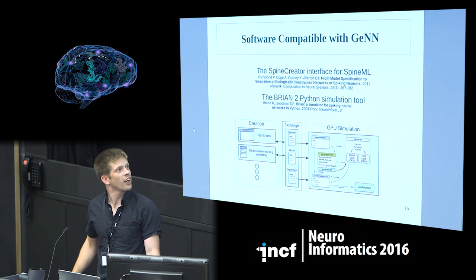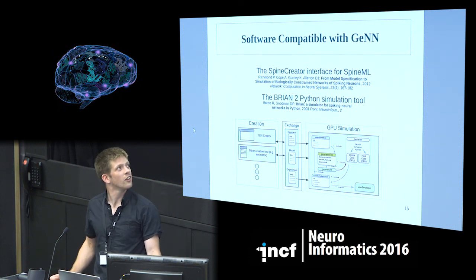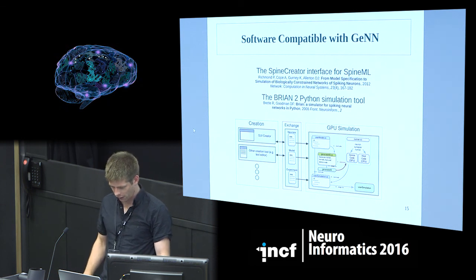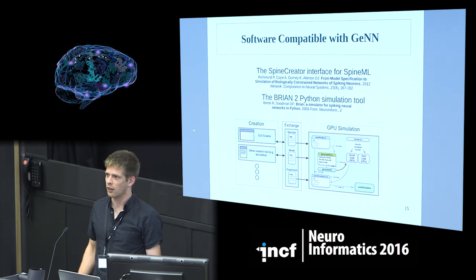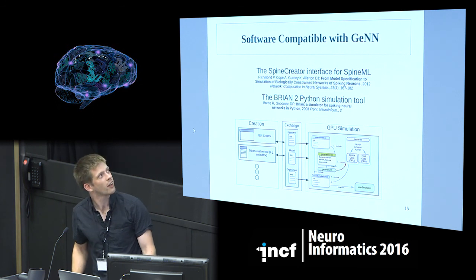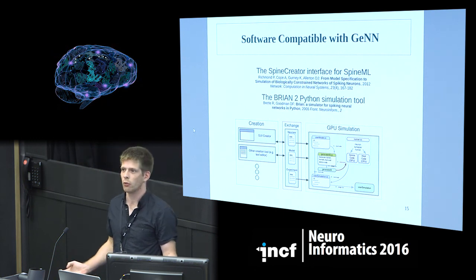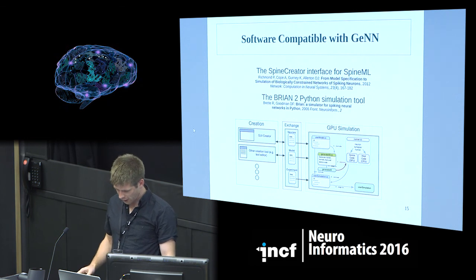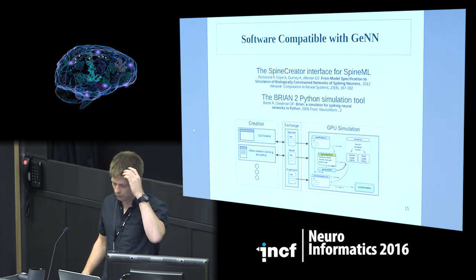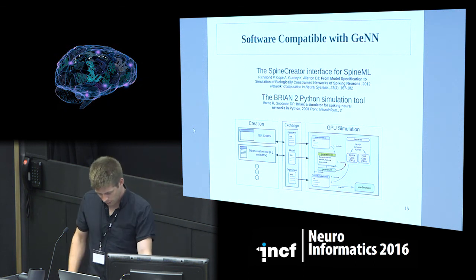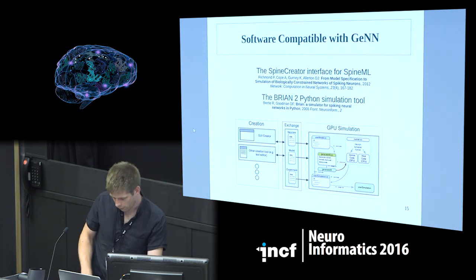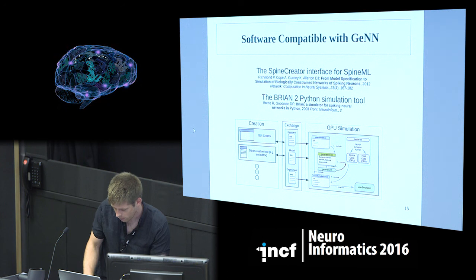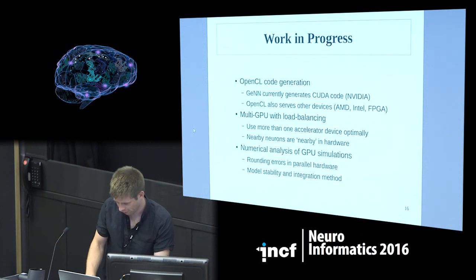GeNN can be used standalone from the command line — bash for OSX and Linux — or as part of a bigger simulation package. We serve as a backend to the SpineCreator GUI neural network package, and we also have an interface to the Brian 2 Python simulator, thanks to Dan Goodman and Marcel Stenberg.